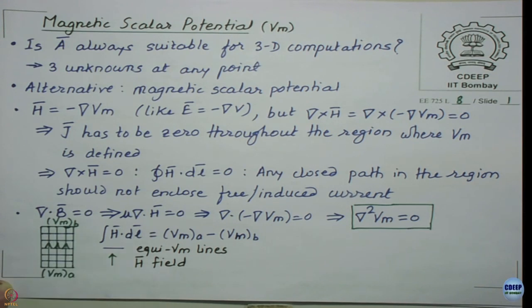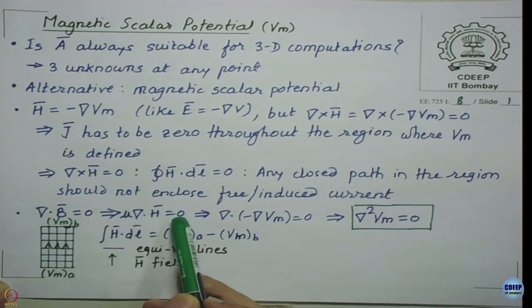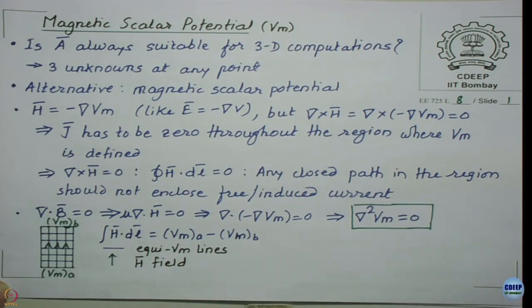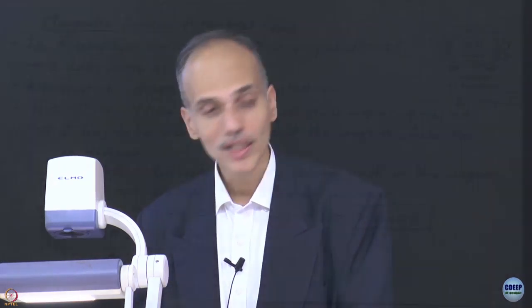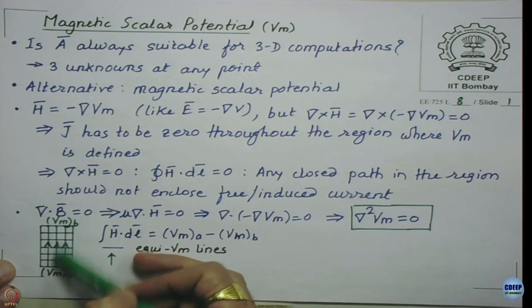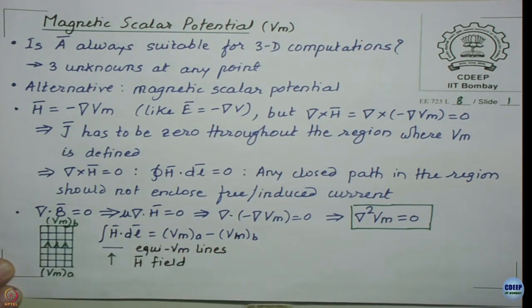Since ∇·B = 0, we get μ∇·H = 0, and substituting H = −∇Vm simply gives Laplace's equation. If you have a 3D problem with a region where current sources are absent, you can excite the structure using boundary conditions of this magnetic scalar potential, establish the flux condition, and then analyze the flux distribution in the domain in greater detail. However, this must be done only for the magnetostatic case — even in core material, eddy currents cannot be analyzed. It is mainly useful for 3D magnetostatic analysis.